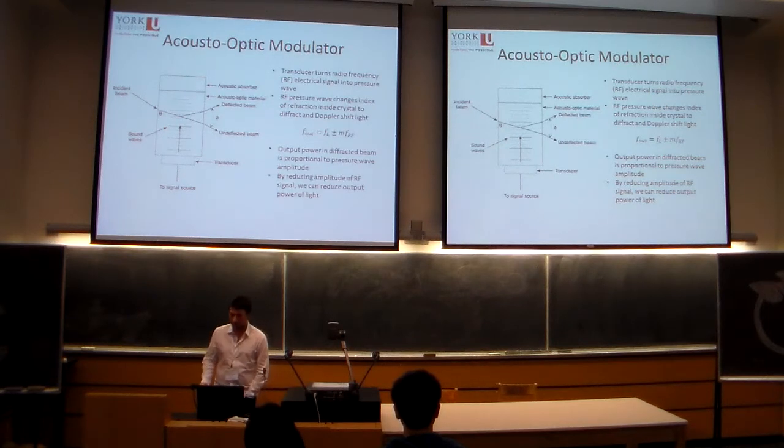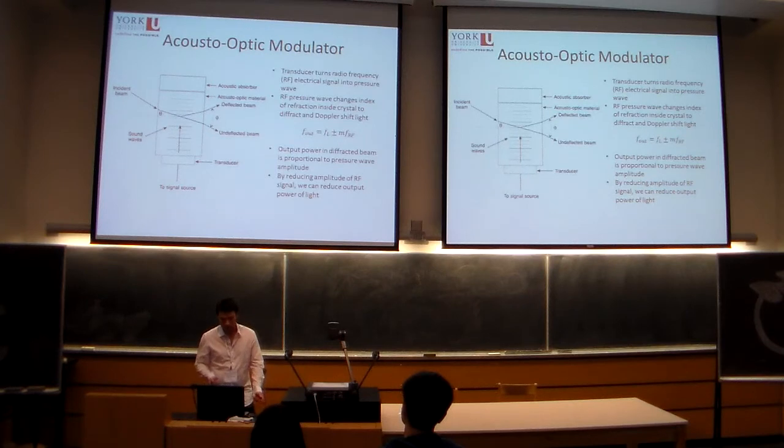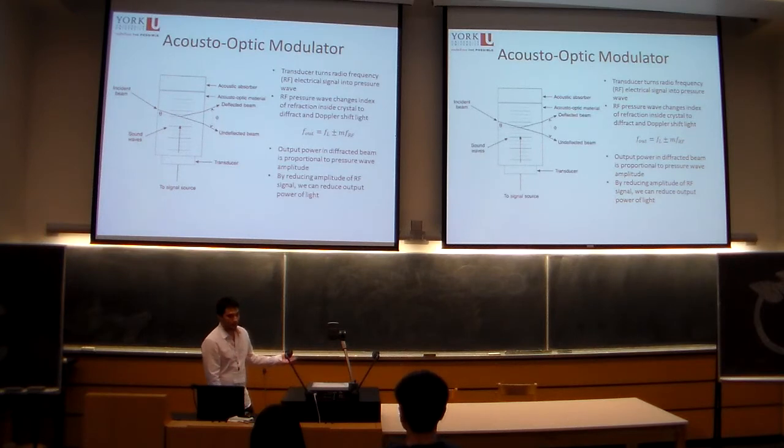So that's not too useful for me. For me, we use the AOM to alter the intensity of our laser beam because the output intensity of the diffracted beams can be changed by changing the amplitude of the RF signal which we send to the AOM.